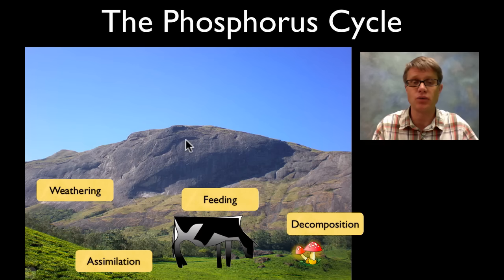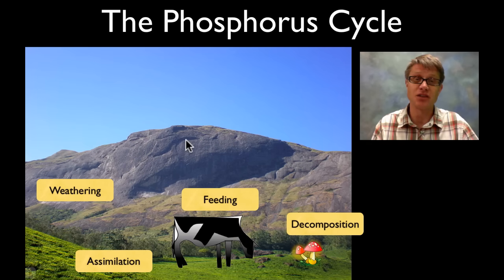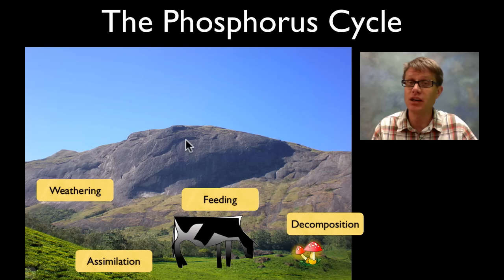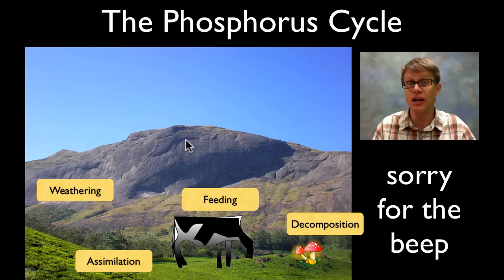There's also a sulfur cycle as well. And so these are all biogeochemical cycles — they're ways that we can take the nutrients that we need, move them out of our environment into us and back again. And I hope that's helpful.